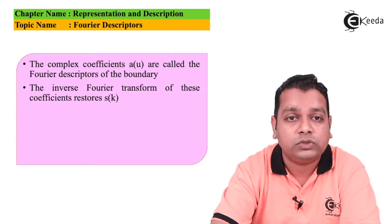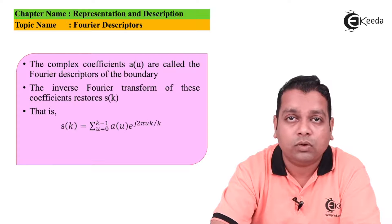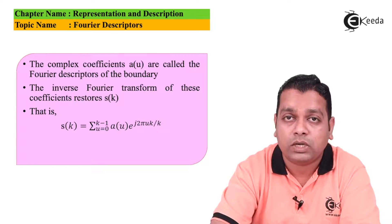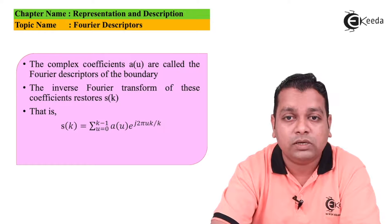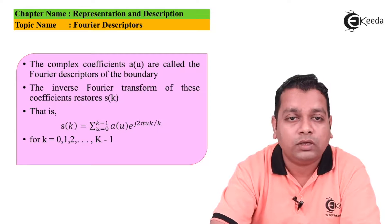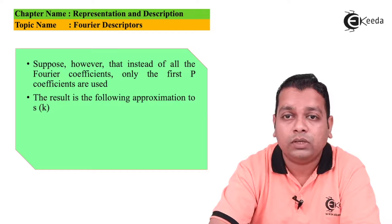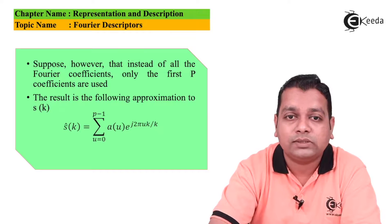The inverse Fourier transform restoring s(k) is given by s(k) = Σ_{u=0}^{K-1} a(u) · e^{+j2πuk/K}, for k = 0, 1, ..., K-1. Suppose however that instead of all Fourier coefficients, only the first P coefficients are used. The result of the following approximation to s(k) can be given as ŝ(k) = Σ_{u=0}^{P-1} a(u) · e^{+j2πuk/K},